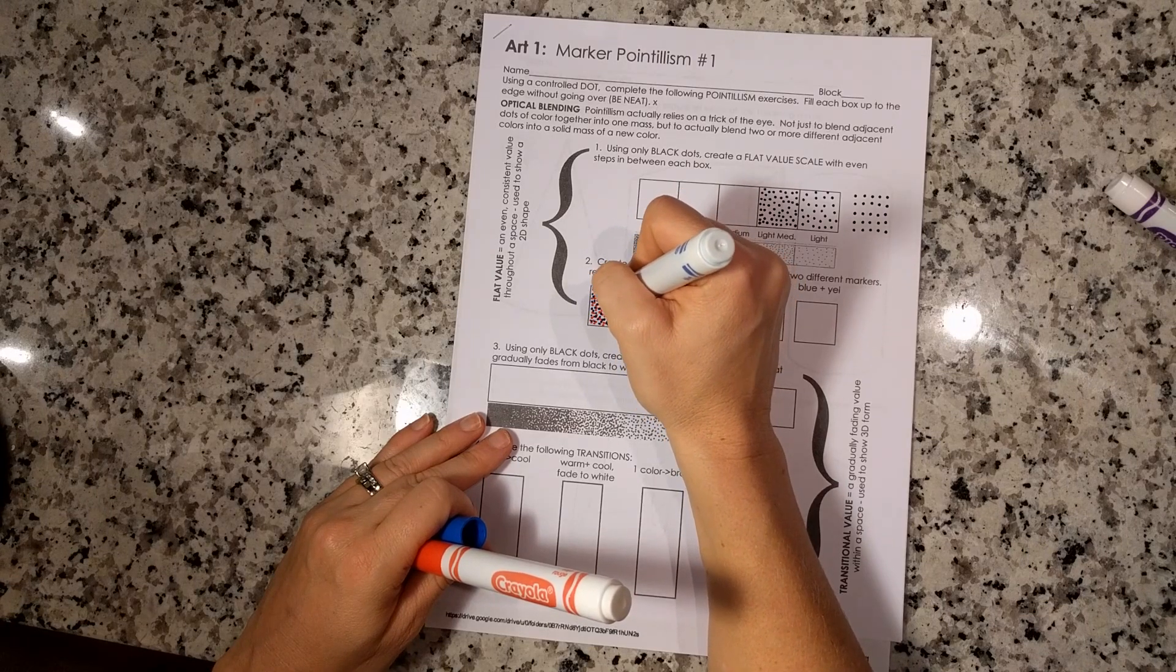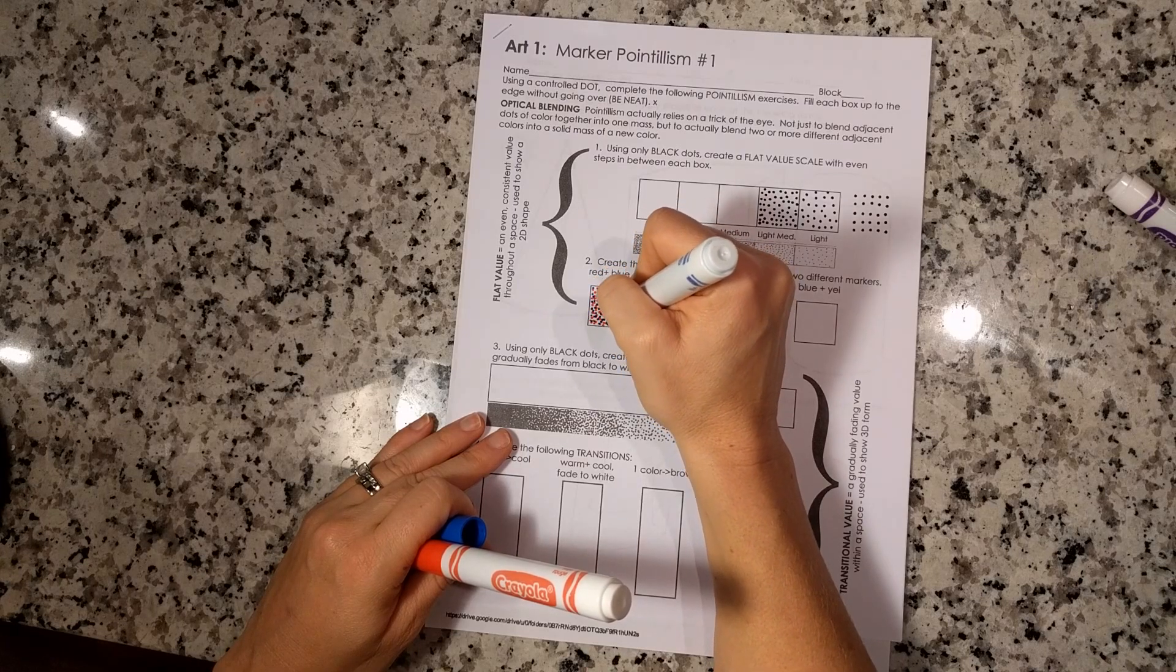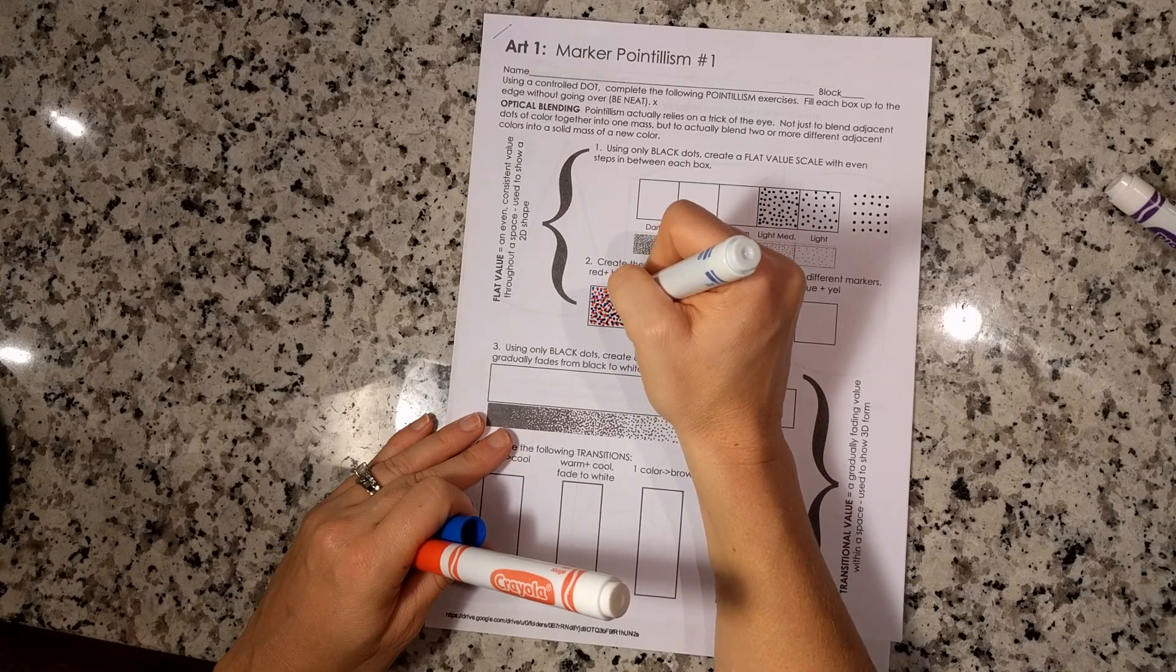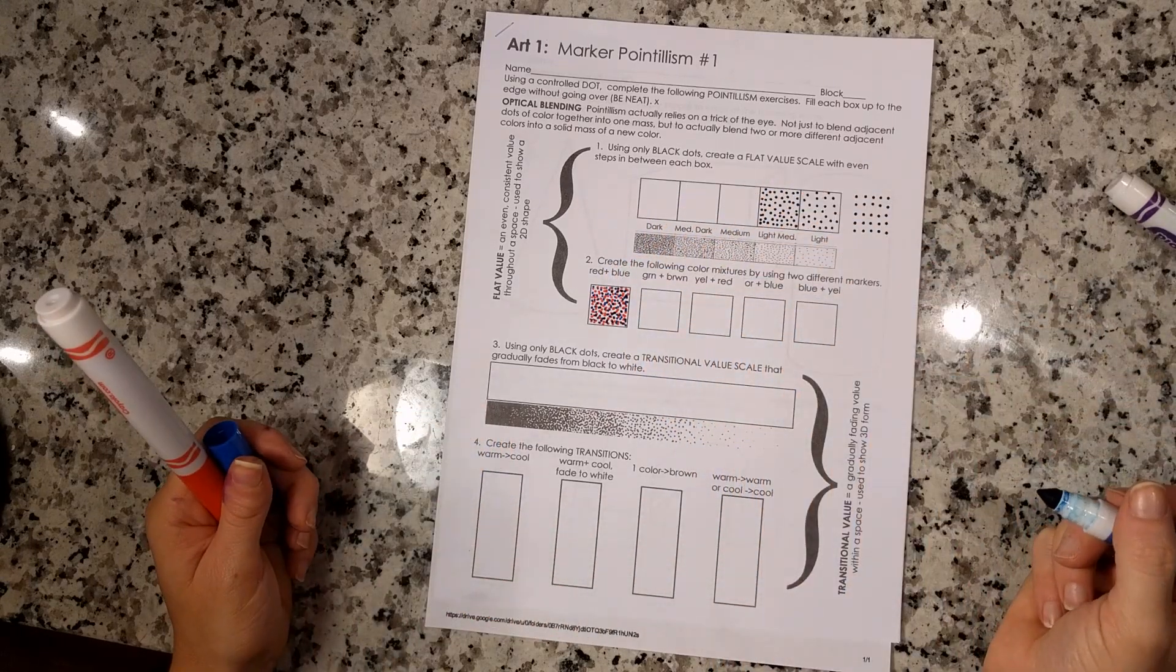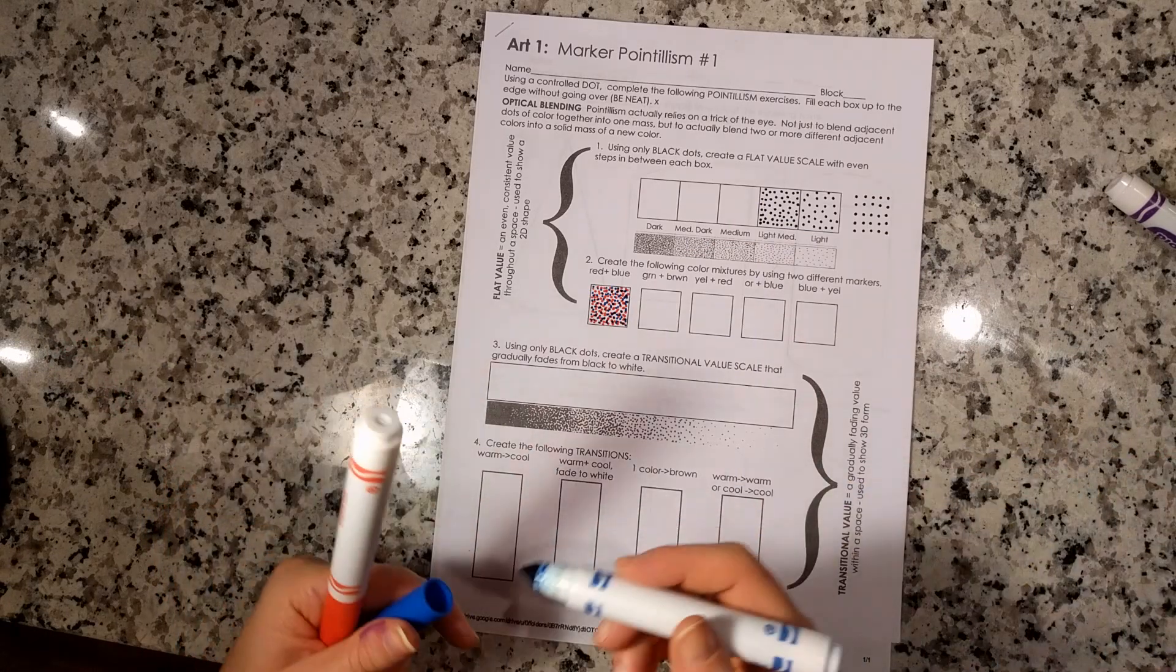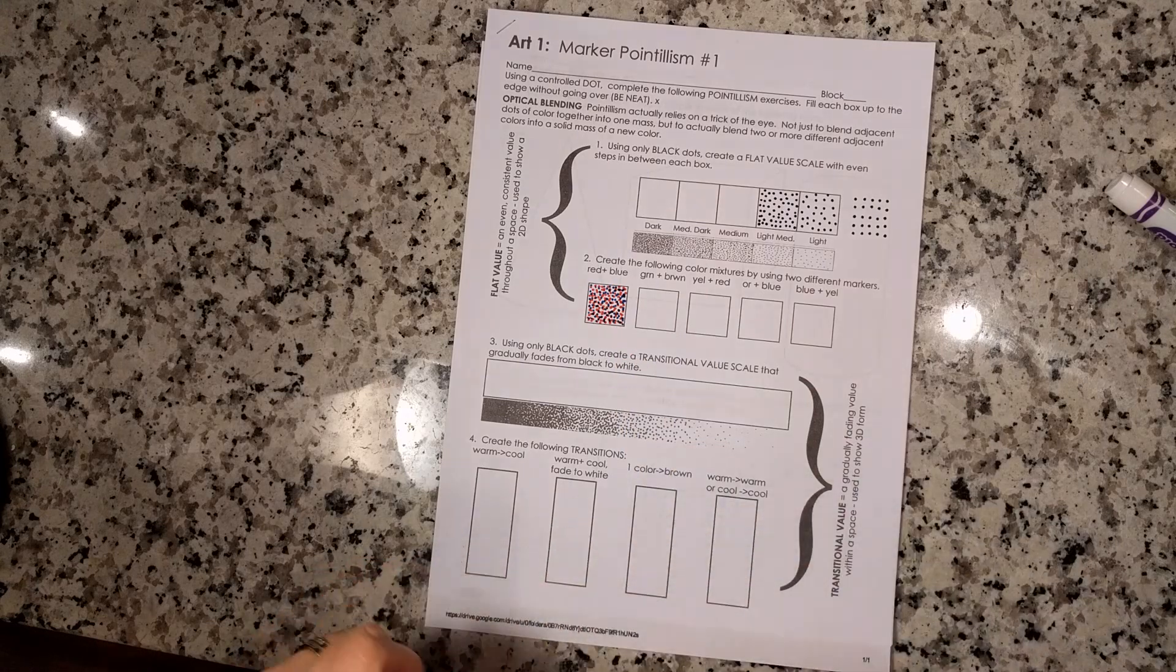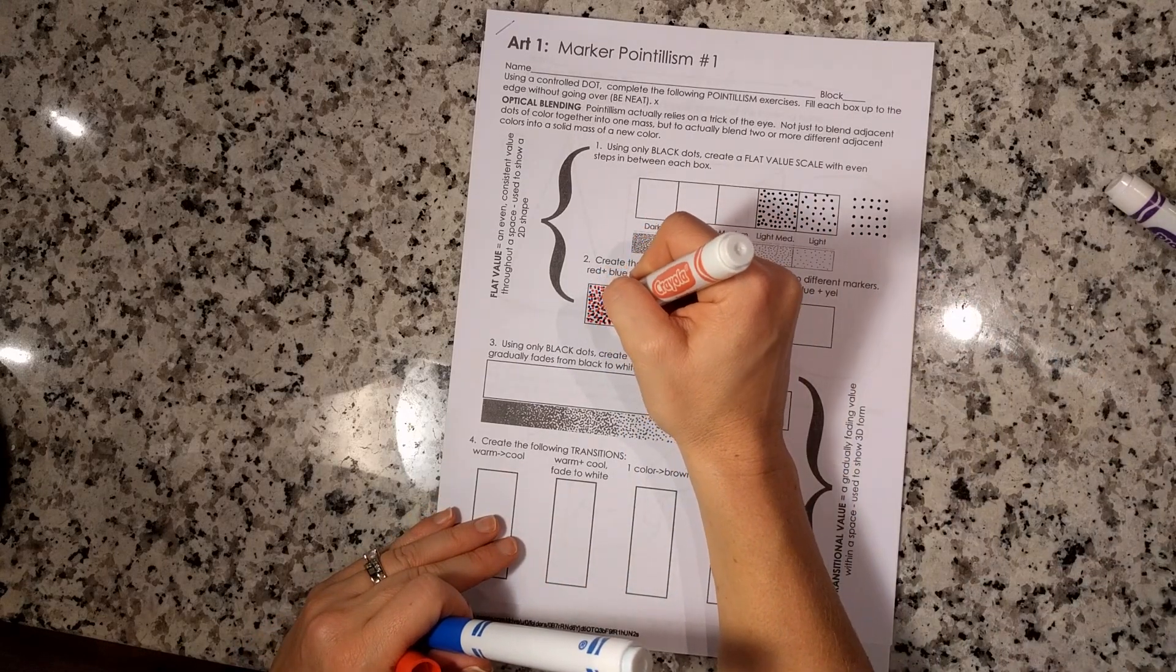Being neat, using good craftsmanship, controlled stipple dot, getting all the way up to the edge. As I look at that and blur my eye, I'm about done. It looks a little lighter in the center here, so I'm going to add a few more red dots.